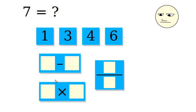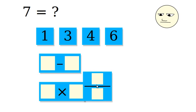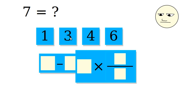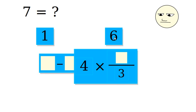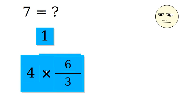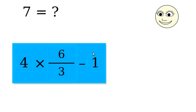In level 7, we have a division. We can do 3 times 2. No, 4 times 2 is 6 over 3, and minus 1. That is 7.